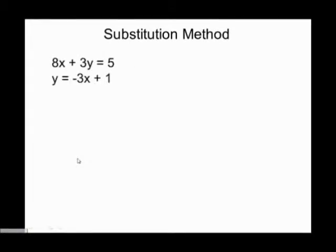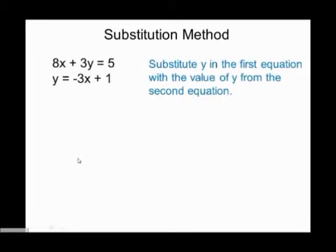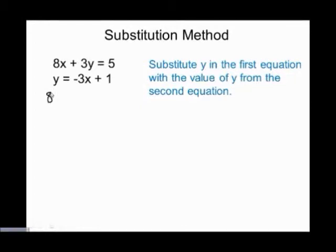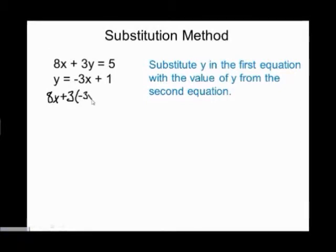Let's take a look at an example. We've got two linear equations: 8x plus 3y equals 5, and the second one is written in functional form: y equals negative 3x plus 1. For the substitution method, we're going to substitute y in the first equation with the value of y from the second equation. If one equation were written as x equals something, you'd substitute for x instead. So I'm going to rewrite the first equation, replacing y with what y equals in the second one: negative 3x plus 1.